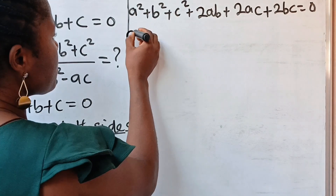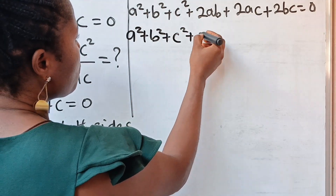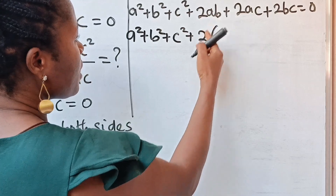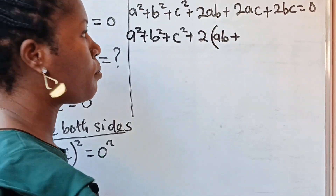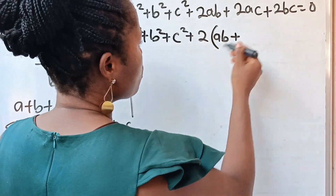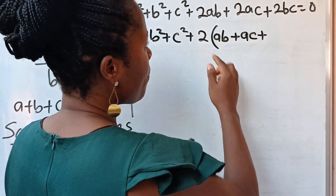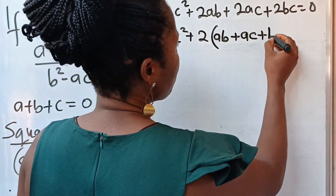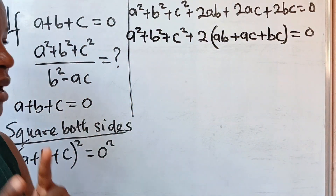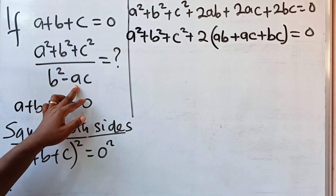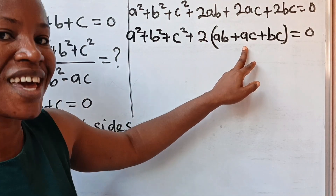First, let us factorize 2 from this side. So we have a squared plus b squared plus c squared plus 2 brackets: ab plus ac plus bc is equal to zero. Now, we have ac here — we've gotten ac, so we are not going to touch it again.